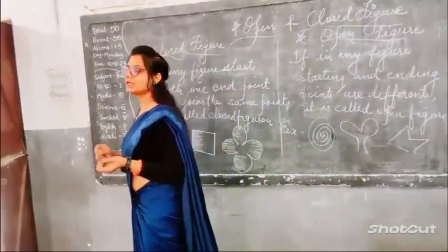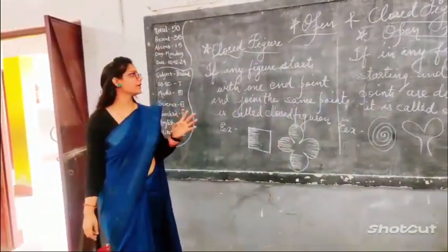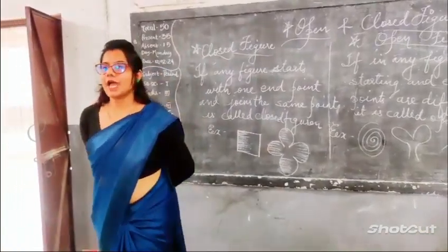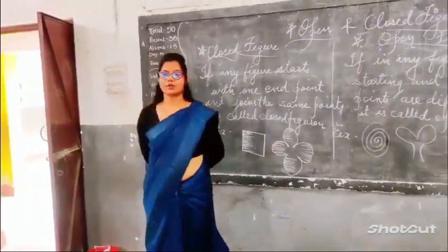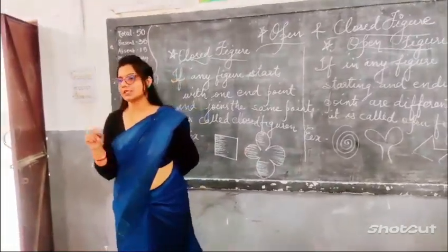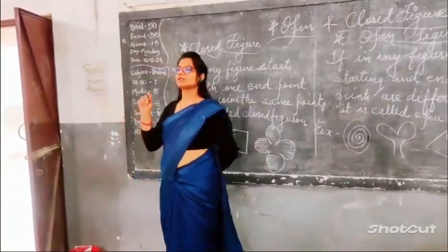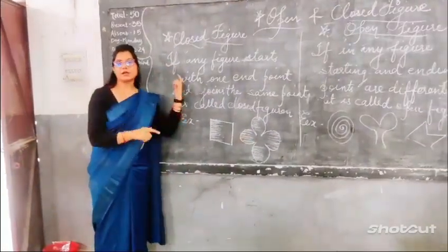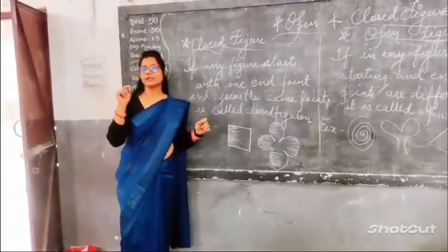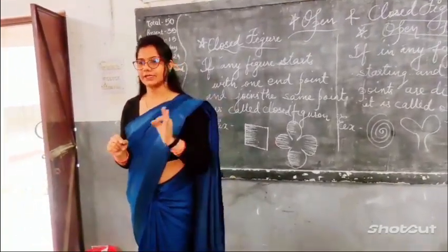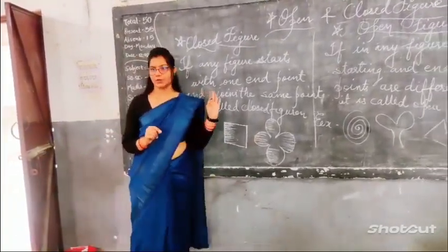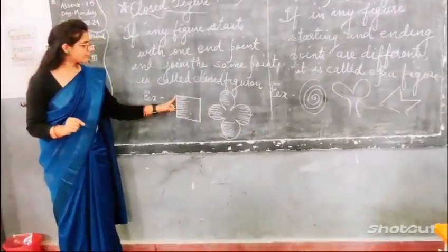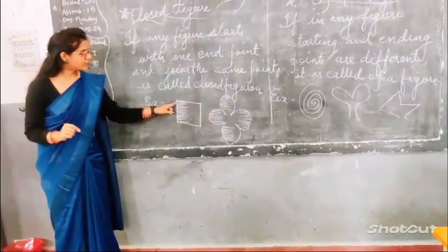First, let's understand the difference between open and closed figures. A closed figure means if we have any object or figure and that figure starts from one point and joins at the same point — or there is no gap between that figure — then it is called a closed figure. See this figure; these are closed forms. It starts from one end and joins at the same point.